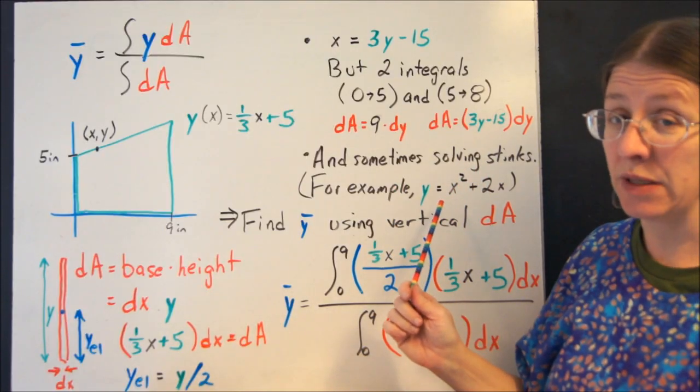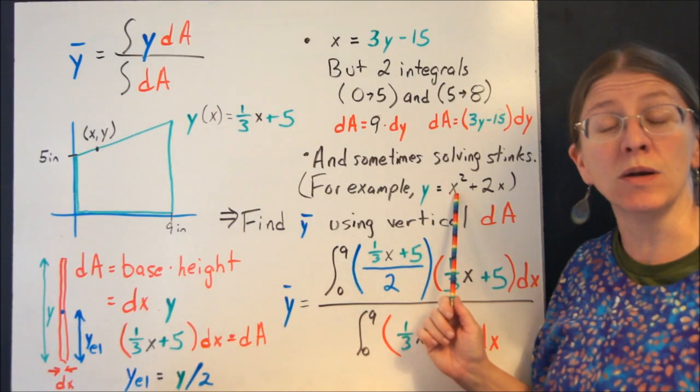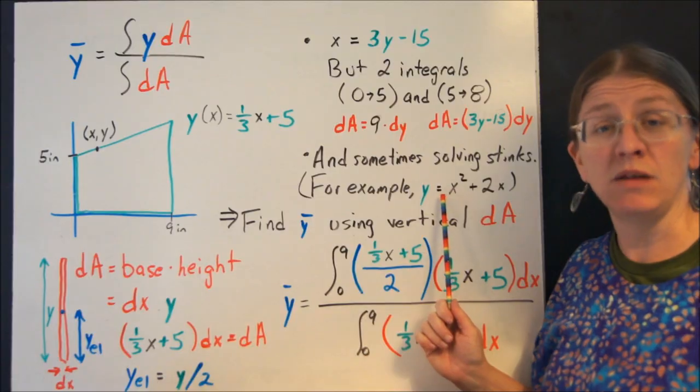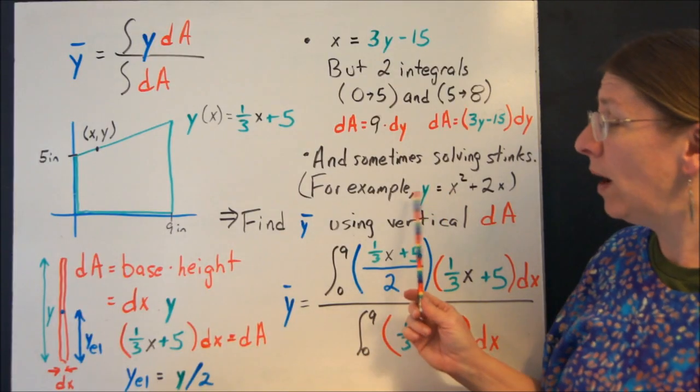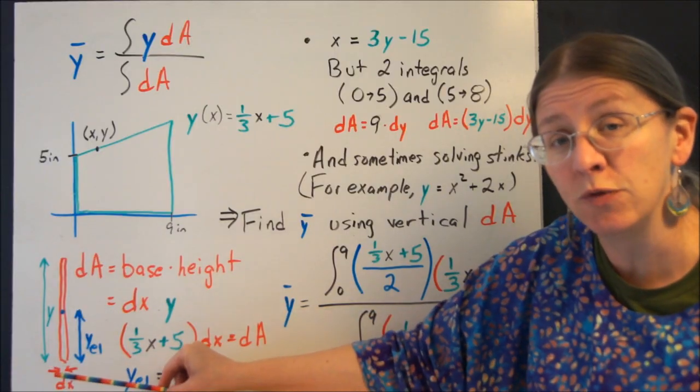Or you're going to have to do something different. And sometimes you really want to do something different because if you end up with something like x squared plus 2x, you do not want to solve and then integrate. And they get worse. So we want to know what I can do to use the simple vertical rectangle I had before.